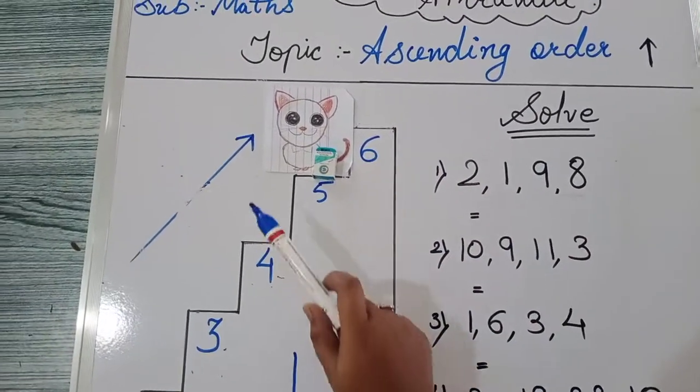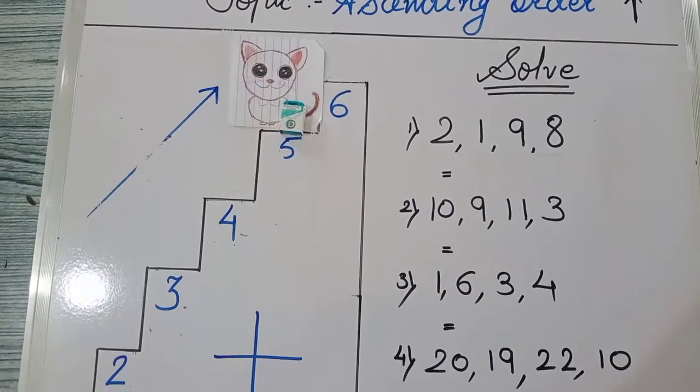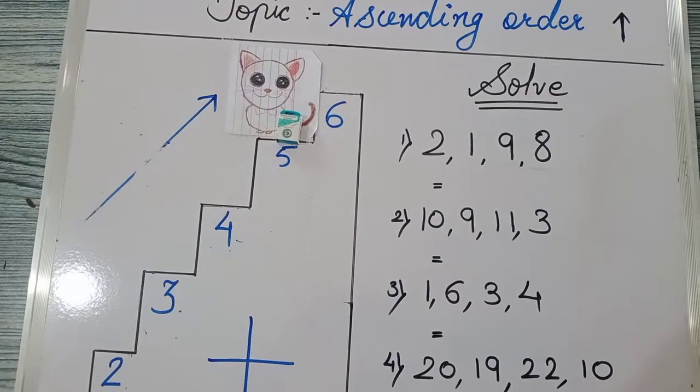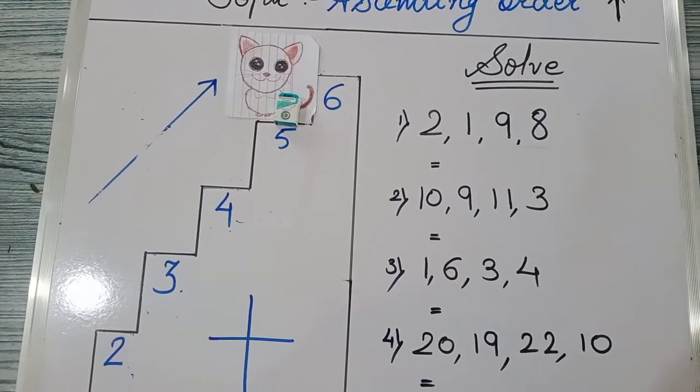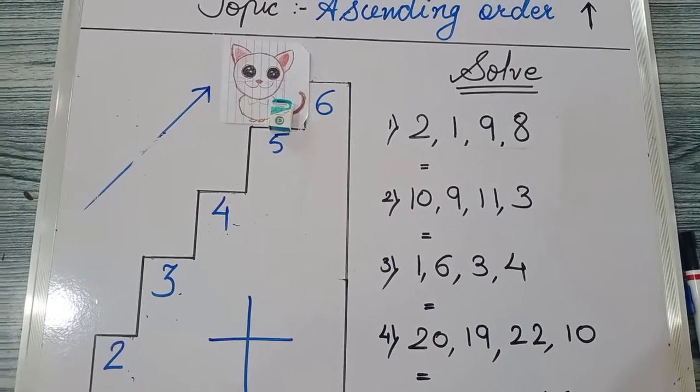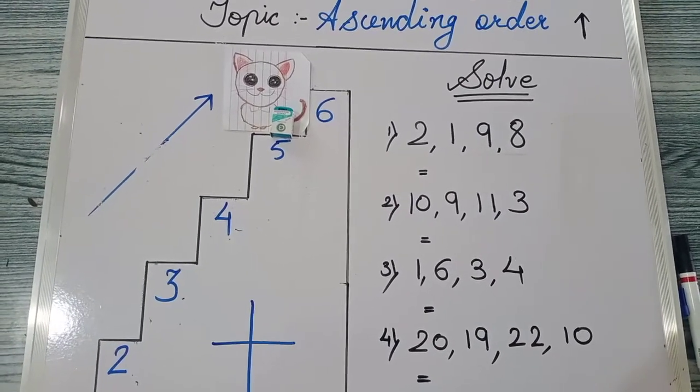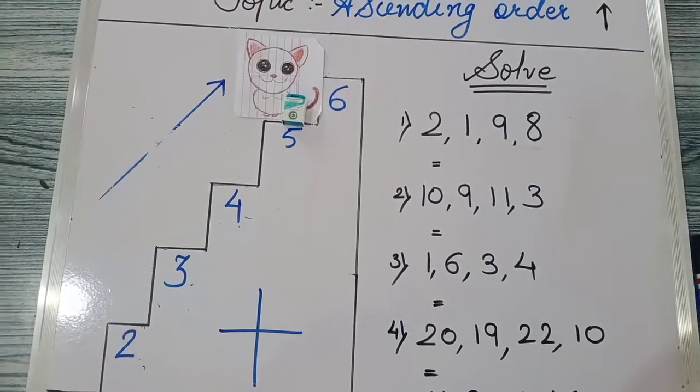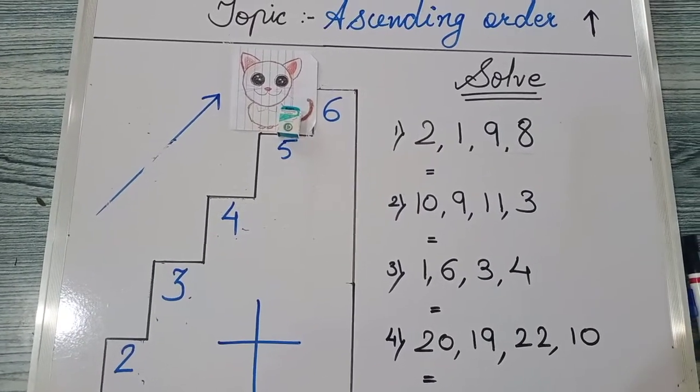Like this, it goes on increasing. This arrow shows that the stairs are in increasing order. Understood? Ascending order means the numbers goes on increasing. 1 ke baat 2, 2 ke baat 3, 3 ke baat 4. Ascending orders me number ki quantity bade hoti jaati hai. Number ki quantity kam nahi hoti.